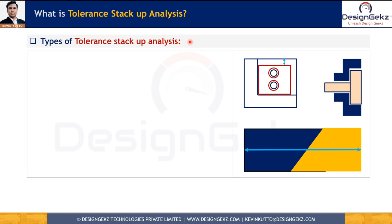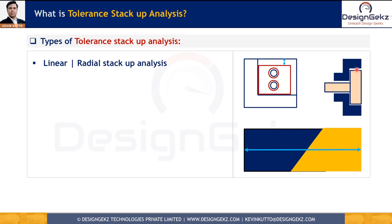Tolerance stack-up analysis can be classified into many types. The first way is linear versus radial stack-up, based on whether dimensions are linear or diametrical. For example, if calculating design clearance between two sides of a blue part and red part, all contributing dimensions are linear — so it is called linear stack-up. But if determining worst-case clearance between two round parts, all contributing dimensions are diametrical, so it is radial stack-up.